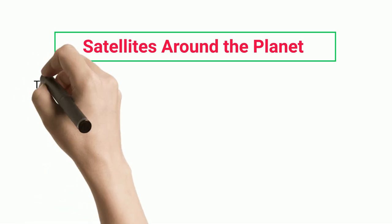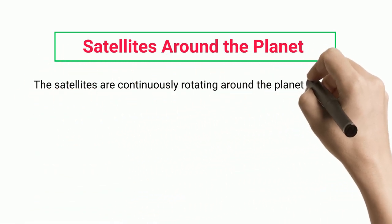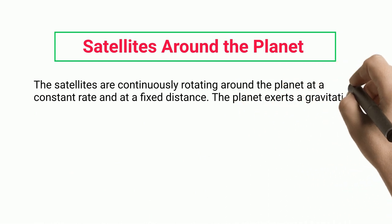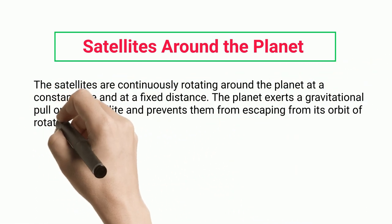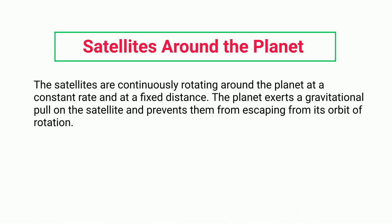Satellites Around the Planet. The satellites are continuously rotating around the planet at a constant rate and at a fixed distance. The planet exerts a gravitational pull on the satellite and prevents them from escaping from its orbit of rotation.